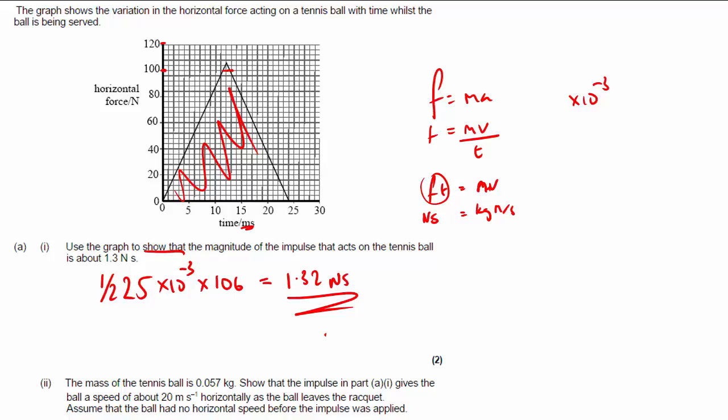Next bit. The mass of the tennis ball is 0.057 kilograms. Show that the impulse in part 1a gives the ball a speed of about 20 meters per second horizontally as the ball leaves the racket. We can go back to this. Since FT equals MV and we've just calculated FT, dividing both sides by M, FT over M will give me V.